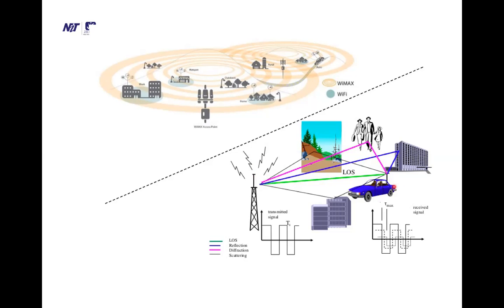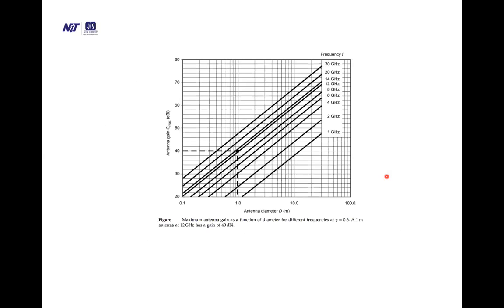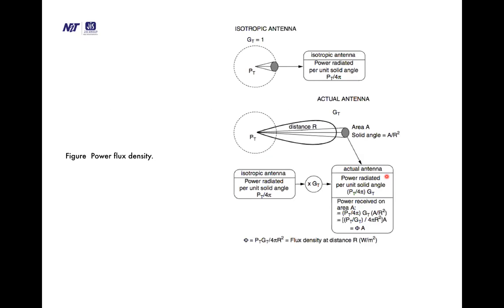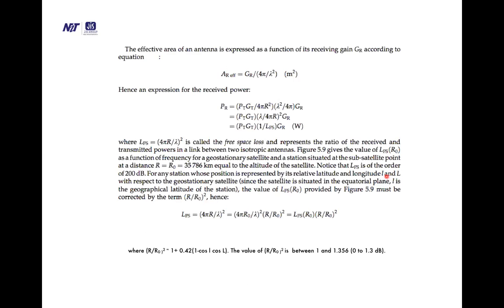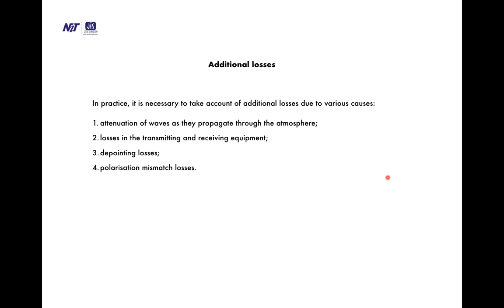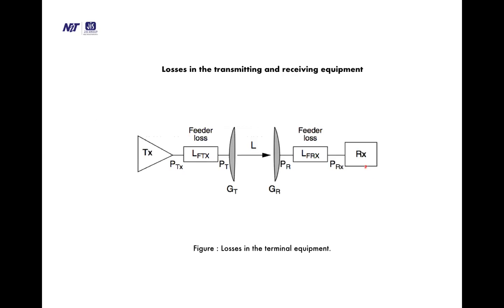There are line-of-sight signals as well as different reflection, refraction, diffraction, and scattering effects. The vector sum of all these components means that although the line-of-sight signal may be strong, the total received signal can be deteriorated. The antenna parameters that affect this include radiated power and effective isotropic radiated power. Uplink and downlink power calculations, and losses — attenuation of waves as they propagate through the atmosphere, losses in transmitting and receiving equipment, depointing losses, and polarization mismatch losses — were covered in earlier sessions.